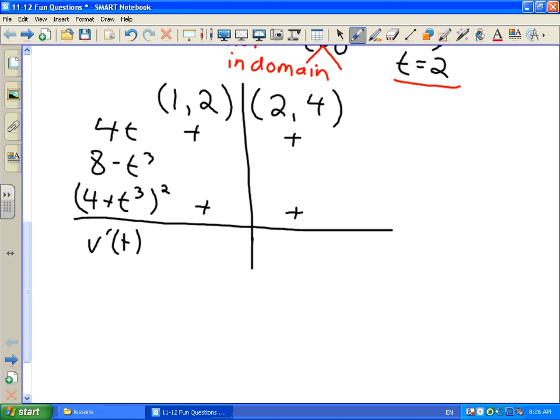The last term we have to work on here is 8 - t³. If we put in a test value like 1.5 or something just a bit bigger than 1, this is going to be positive here. And if we put in a test value of 3, 3³ is going to be 27, so it's going to be negative over here. So our derivative, v'(t), changes sign from positive to negative at this point, t = 2.